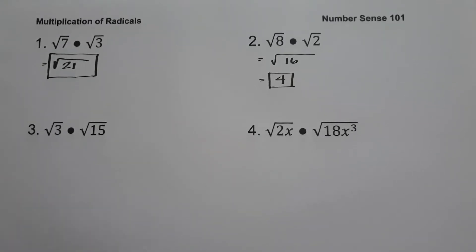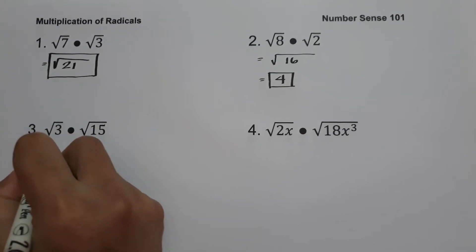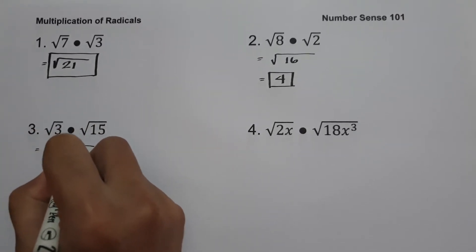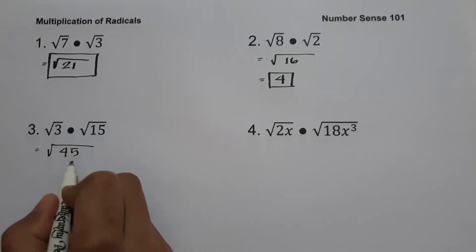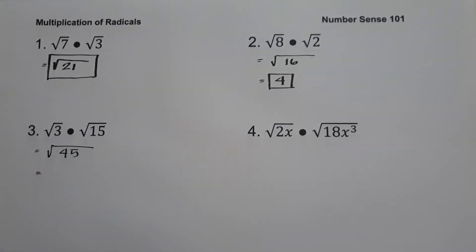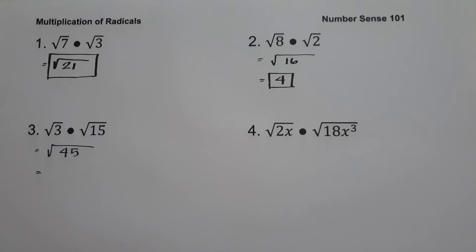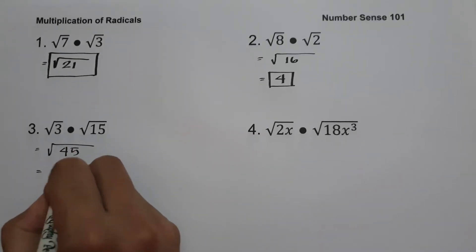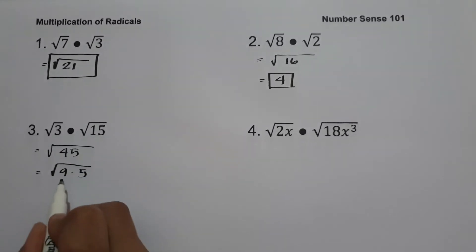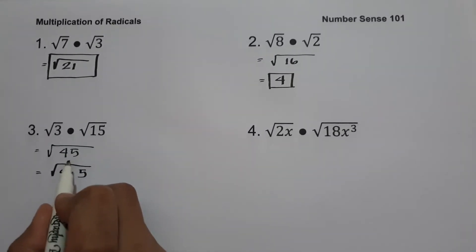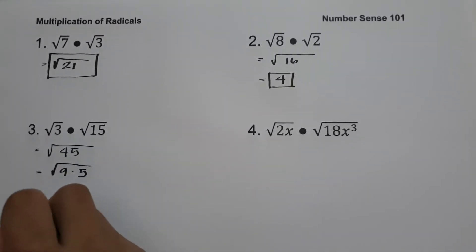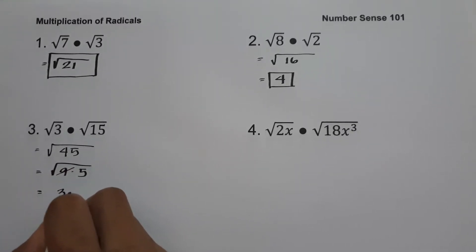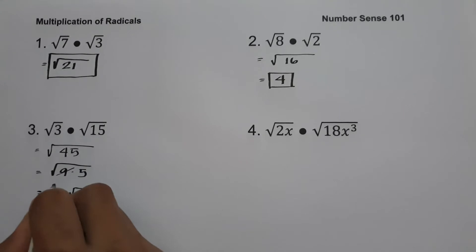On example number three we have square root of 3 multiplied by square root of 15. Again, we have the same index, so 3 times 15 is 45. Since we can factor 45, let us find the factors: 9 and 5, where 9 is a perfect square. So the square root of 9 is 3, giving us 3 square root of 5.